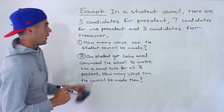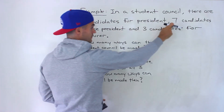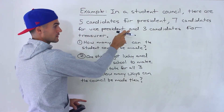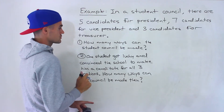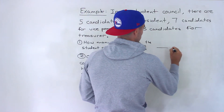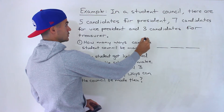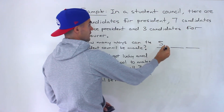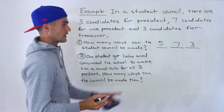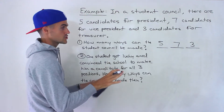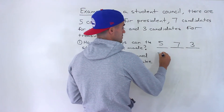Starting with number one, the five candidates are different for president than the seven candidates for vice president and the three candidates for treasurer — they're all different, with no carryover as there will be in number two. So this one is a little more simple. For president there are five ways, seven ways to make the vice president, and three ways to make the treasurer. With no restrictions, you just multiply all of these: five times seven is 35, times three gives us 105.